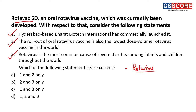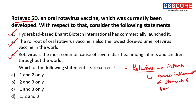Rotavirus is a viral disease primarily seen in infants. It leads to severe inflammation of the stomach and bowels, and it is a highly contagious virus primarily seen among infants and children throughout the world. It is one of the major causes of death of almost 5 lakh children worldwide annually, which is why it is considered one of the important threats to infants and children. All statements related to the Rotavac 5D vaccine are correct, and the answer is D, 1, 2 and 3.